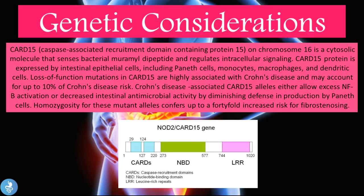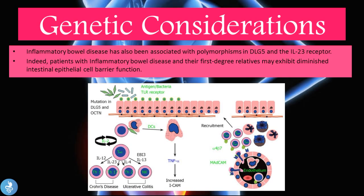Crohn's disease-associated CARD15 alleles either allow NF-κB activation or decrease intestinal antimicrobial activity by diminishing defensin production by Paneth cells. Homozygosity for these mutant alleles confers up to a 40-fold increased risk for fibrostenosis. The CARD15/NOD2 gene on chromosome 16 — when loss-of-function mutations occur — makes people more prone to IBD. IBD has also been associated with polymorphisms in DLG5 and the IL-23 receptor. Patients with IBD and their first-degree relatives may exhibit diminished intestinal epithelial cell barrier function.